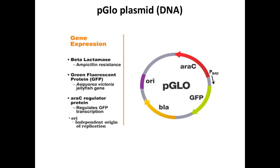How do cells control which genes are expressed? We now know that regulatory proteins physically bind to DNA and control whether that DNA is used or not. The gene we've given the bacteria is within a regulated system called an operon. We've also given them the ability to make the protein AraC, which modifies the expression of GFP. So we need to zoom in on this region that offers control.